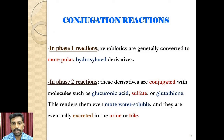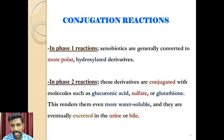Phase 1 reactions yield a polar water-soluble metabolite that is often still active. Many of the products in this phase can also become substrates for Phase 2 reactions, which yield a large polar metabolite by adding endogenous hydrophilic groups to form water-soluble inactive compounds that can be excreted by the body. Phase 2 reactions involve conjugation by coupling of metabolites to another molecule such as glucuronidation, acylation, sulphate, and glutathione also.